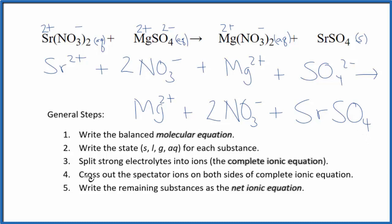At this point, we can cross out the spectator ions. They're on both sides of the complete ionic equation. They haven't changed, so we're not interested in them. In the reactants, I have 2 nitrates, and in the products, I'm going to cross that out. I have the magnesium ion. Again, here, cross it out.